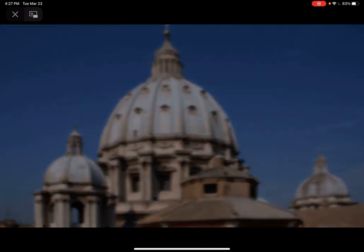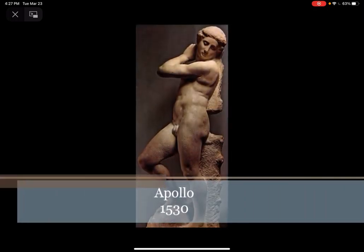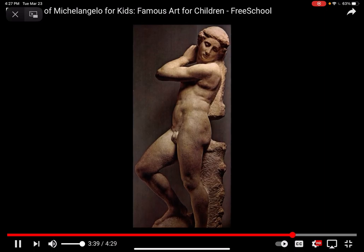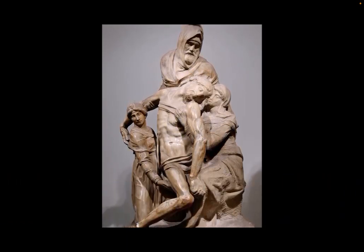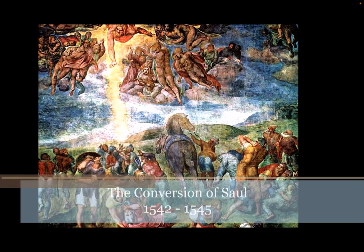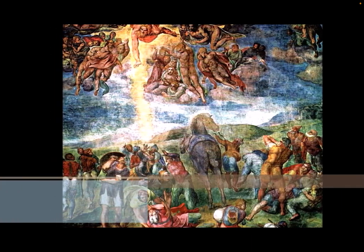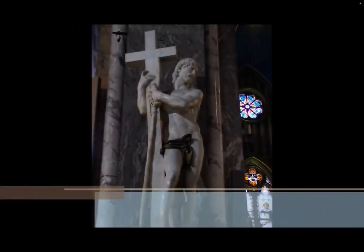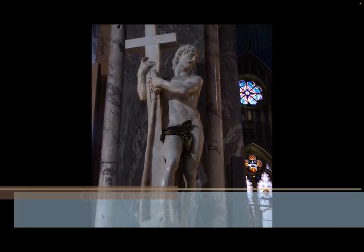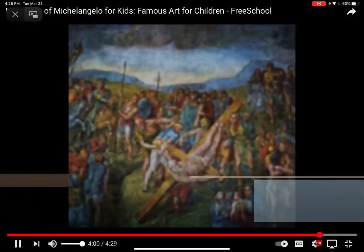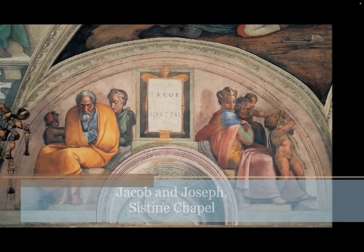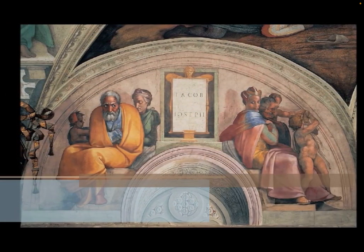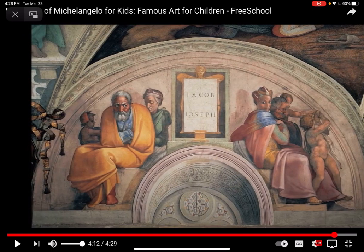He helped design the dome of St. Peter's Basilica. Michelangelo was so famous that two biographies of him were published while he was still alive. He died in 1564 at the age of 88, only three weeks before his 89th birthday. Today, Michelangelo is considered one of the foremost artists of the High Renaissance, alongside Raphael and Leonardo da Vinci. He had a profound impact on the artists that followed him and continues to be studied today. His works are among the most famous and widely reproduced in history. Please take your exit ticket and try to get at least 70% on the video.